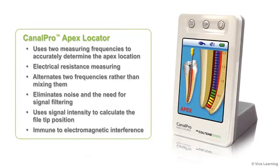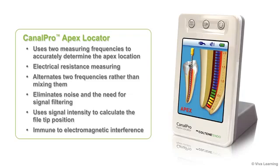In contrast, the CanalPro Apex Locator uses two measuring frequencies to accurately determine the apex location, and it calculates the working length using electrical resistance measuring. Unlike other apex locators, CanalPro alternates these two frequencies rather than mixing them. This eliminates noise and the need for signal filtering. In addition, it uses signal intensity to calculate the file tip position, making the measurement immune to electromagnetic interference.